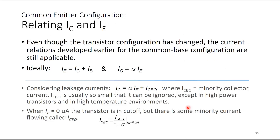Relating IC and IE: even though the transistor configuration has changed, the current relationships from common base are still applicable. Using standard KCL, IE = IC + IB, and IC = α·IE. Considering leakage currents, IC = α·IE + ICBO, where ICBO is the minority collector current. It is usually small enough to be ignored, except in high-power transistors and high-temperature environments, which is why it is included here for completeness.